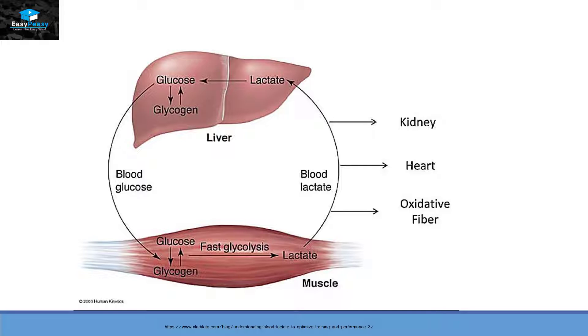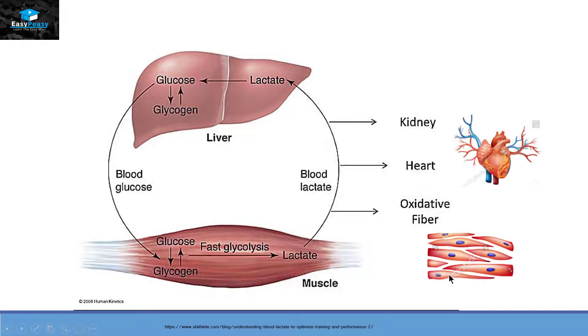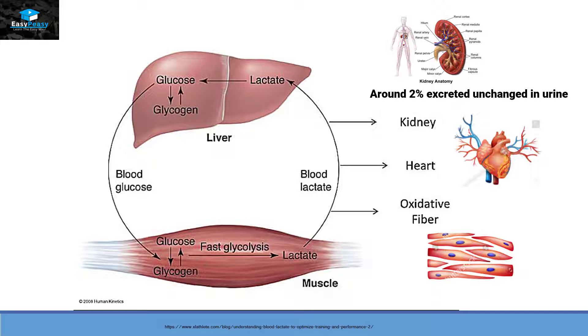The first type of fate is that this lactate can enter other types of cells which are more oxidative, and then it will convert back into pyruvate which will lead to aerobic respiration. Around 2% of lactate will be excreted from kidneys in the form of urine, and most of the lactate goes back to the liver where it converts itself back into glucose by the process called gluconeogenesis. The cycle of converting glucose into lactate and lactate back to glucose is called the Cori cycle.